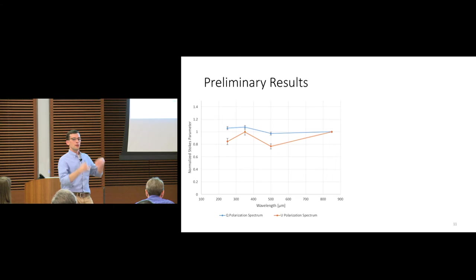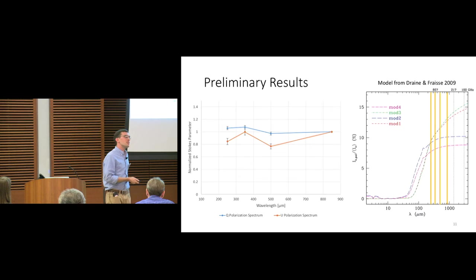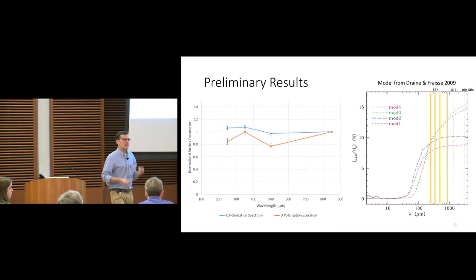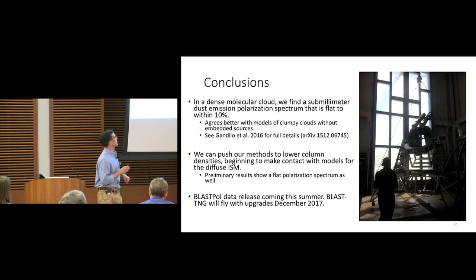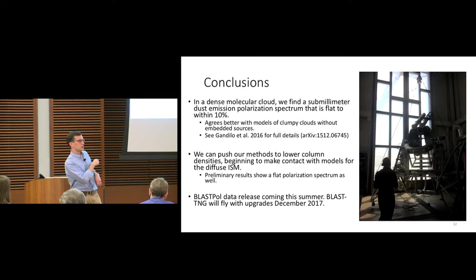We'd like to merge Q and U together into total polarization, but because we see more signal in Q than in U, we believe Q a bit more. We can compare with models of the diffuse ISM from Draine and Fraisse. Our low AV cloud isn't truly diffuse and will be different, but we're within range of making contact with models at lower column densities. We're going to release the BlastPol data soon, and BLAST next generation will do everything better in a couple of years.